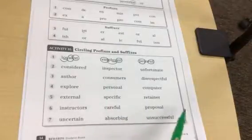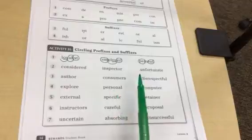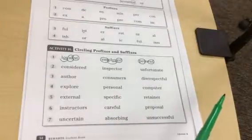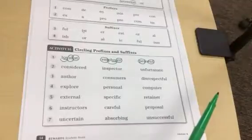Alright, you are going to do the rest of this page. You may do it with a partner. Remember, you are underlining, or circling prefixes and suffixes. And after you've done that, you can underline vowels.